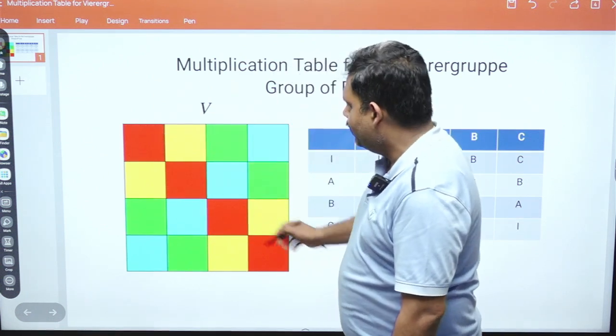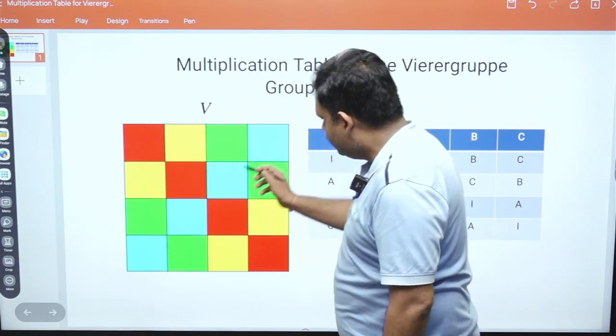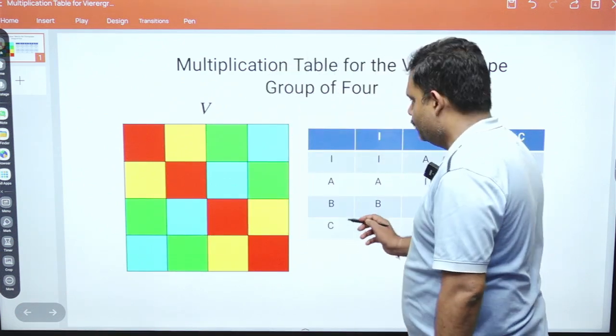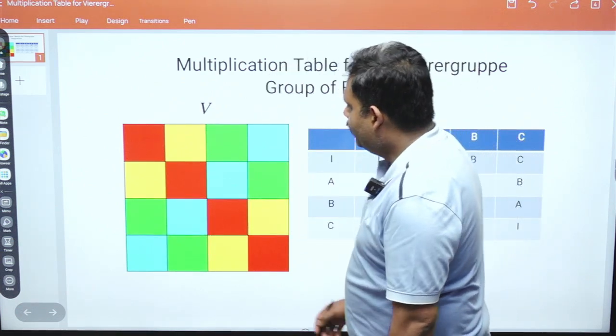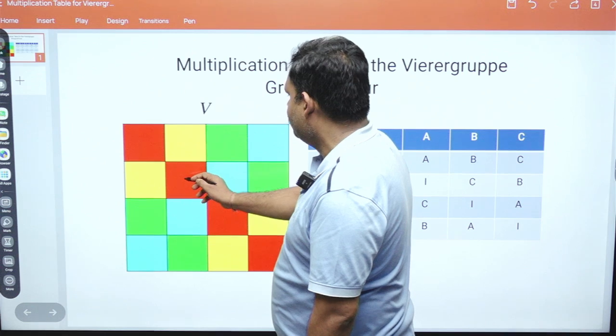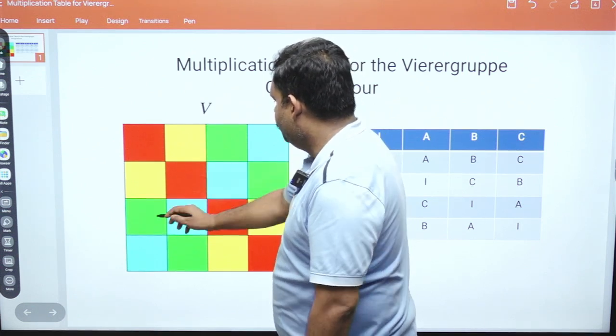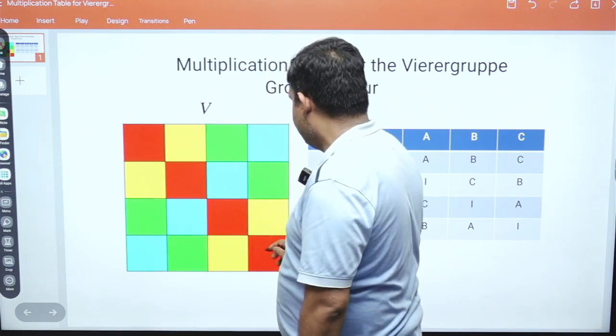The diagonal is your identity, and this will be your C. You can see this is your C. And now here you can have this operation, this one is equal to identity. So A operation A is identity, B operation B is identity, C operation C is identity.